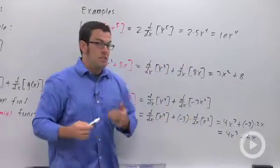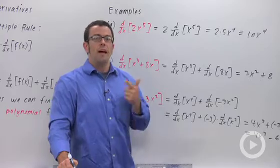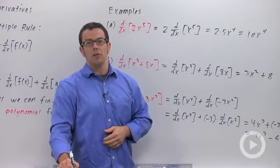That's it. You just need two properties: the constant multiple rule and the sum rule to differentiate any polynomial.